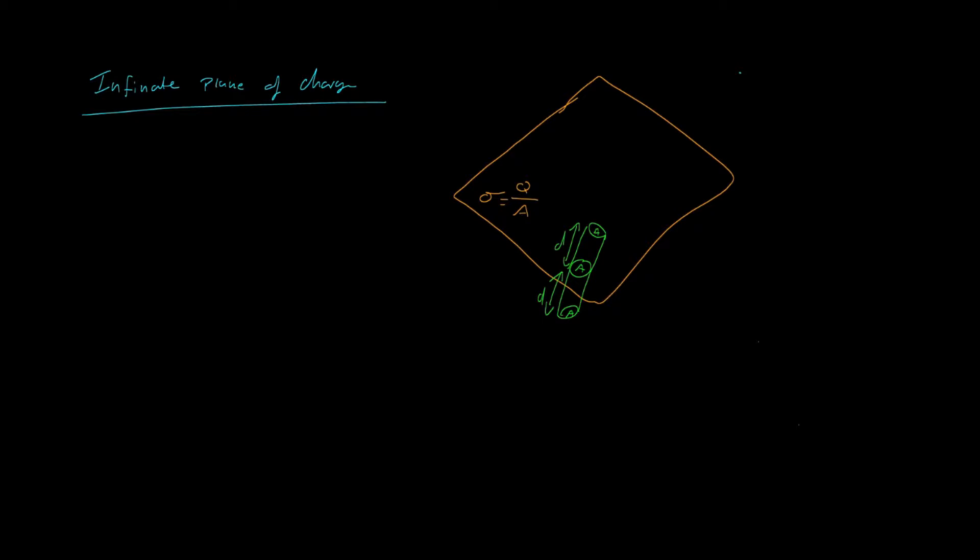If you remember from a previous tutorial, which I will link in the description below on Gauss's law, we should recall that the integral of the electric field dot dA is equal to the charge enclosed divided by epsilon 0.